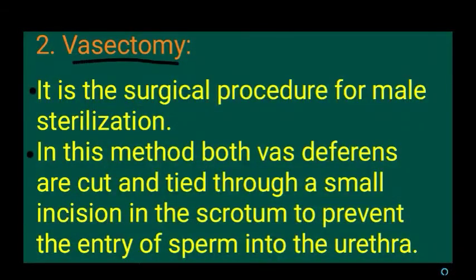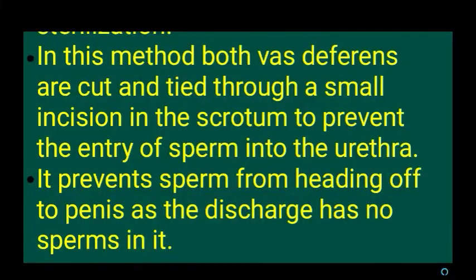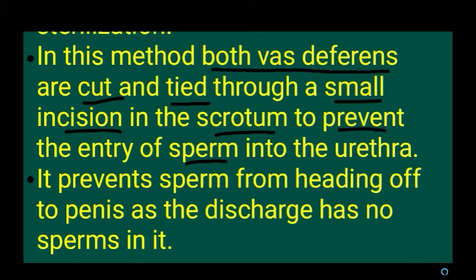Vasectomy is a permanent sterilization method done in males. Both vas deferens are cut and tied through a small incision in the scrotum. This prevents sperm from entering the urethra, so sperm cannot be released or discharged. This is the permanent birth control method in males.